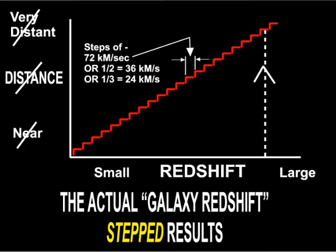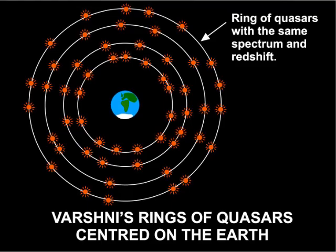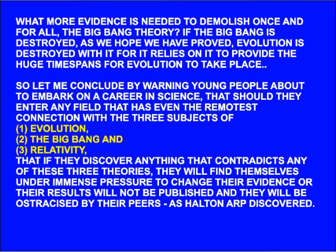So in summary: Halton Arp showed us that redshift was not related to galaxies moving away from us. Tift showed that redshift was emitted in steps and was not continuous. The low temperature of the background radiation was so uniform that it could not explain how stars or galaxies could have formed from the initial Big Bang. And finally, Varshini showed that quasars were in bands of similar spectra centred on the Earth. What more evidence is needed to demolish once and for all the Big Bang theory?